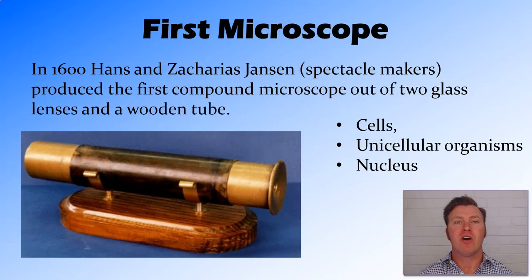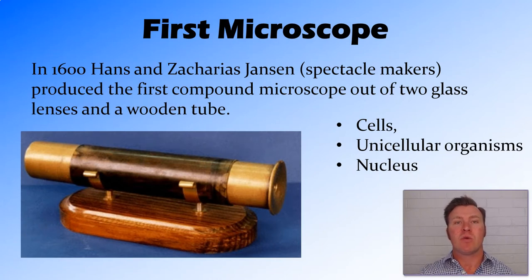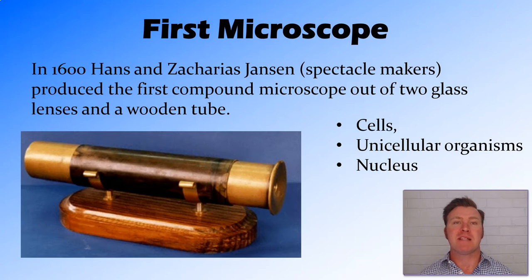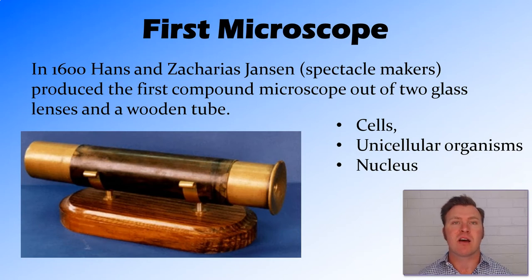The first microscope was invented in 1600 by a couple of spectacle makers, and they were the first ones to actually grind down two lenses and put them together at the end of a wooden tube. From this advancement and similar advancements around that time, many different people made different versions of this microscope and were able to discover things like cells, seeing cells for the first time, and seeing single-celled organisms for the first time.